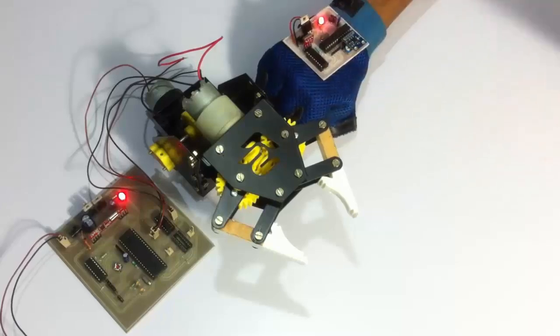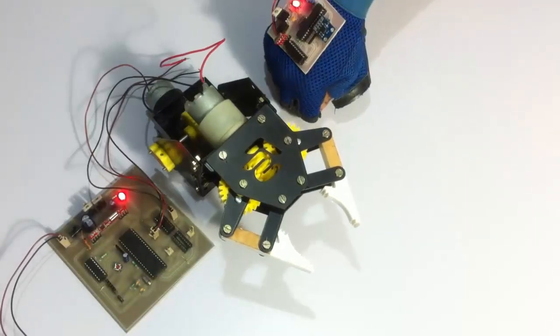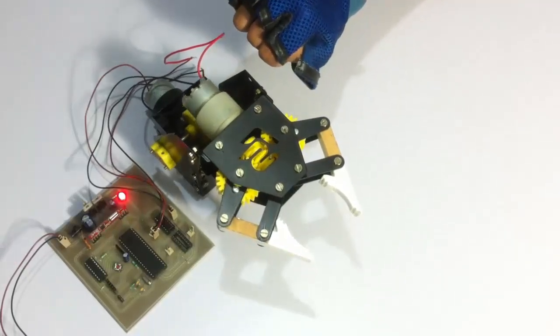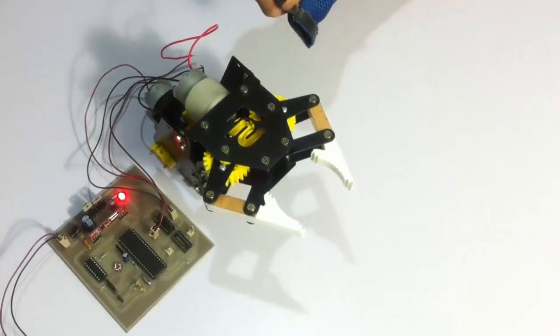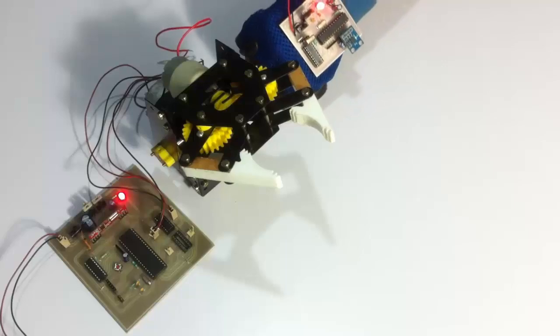So let's see how it works. Let's turn on the receiver circuit. Now let's move it in downward direction, similarly upward direction, similarly the gripper.